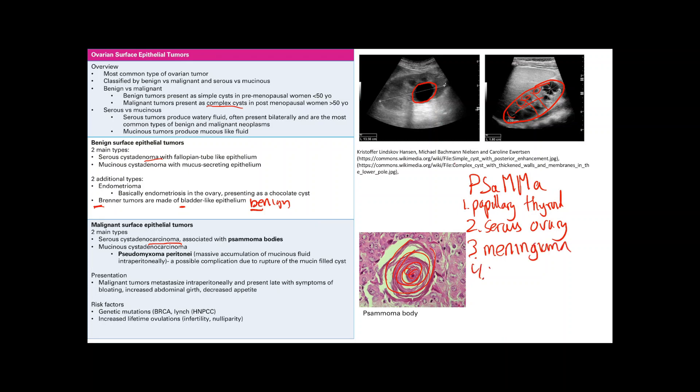Number three is meningioma, and then the fourth would be mesothelioma, which is the cancer in the lung lining. So all these can present with a psammoma body. Remember this is the serous cystadenocarcinoma.